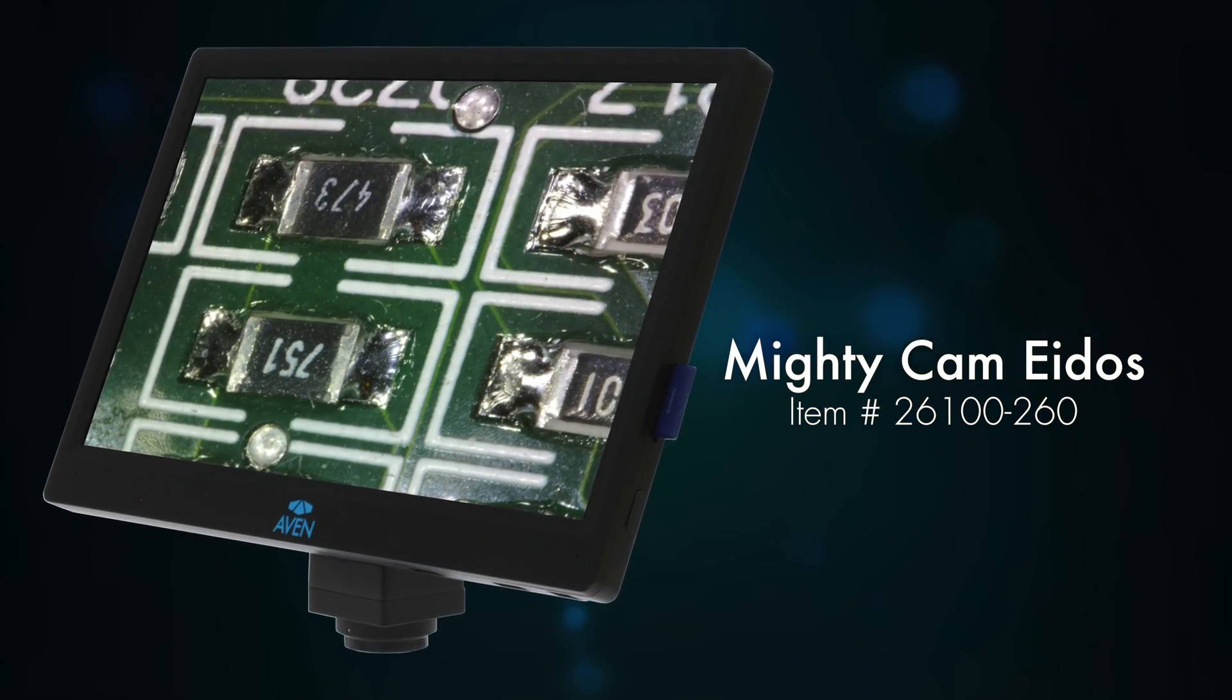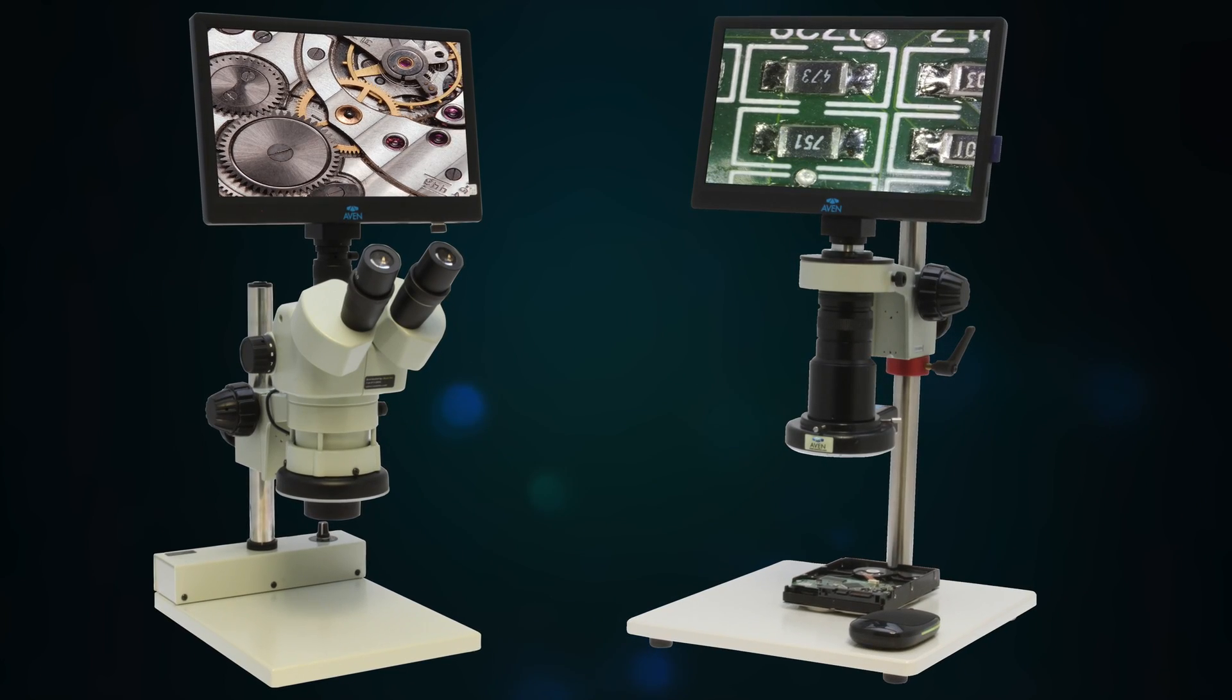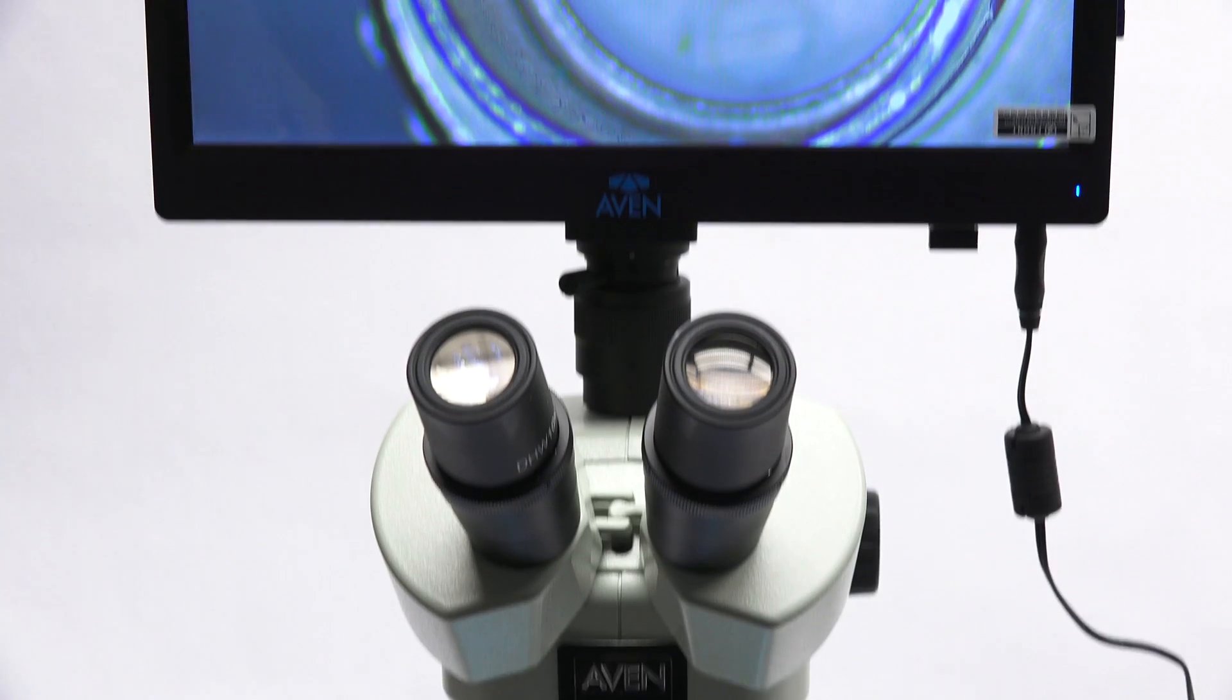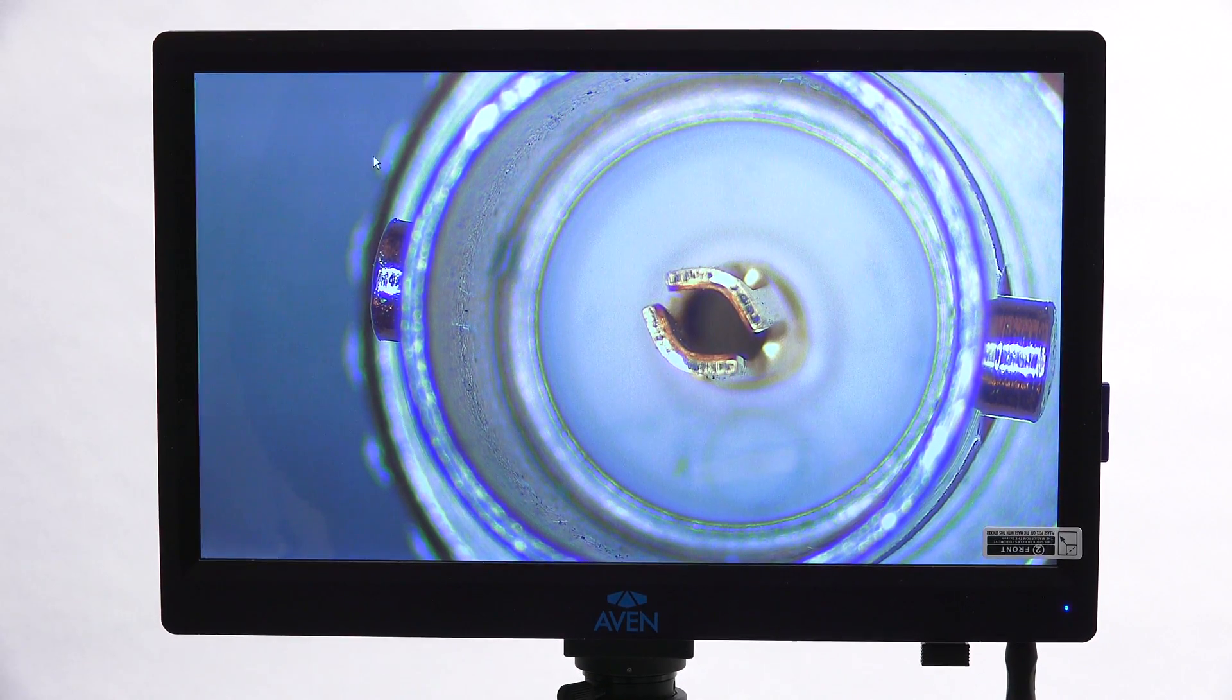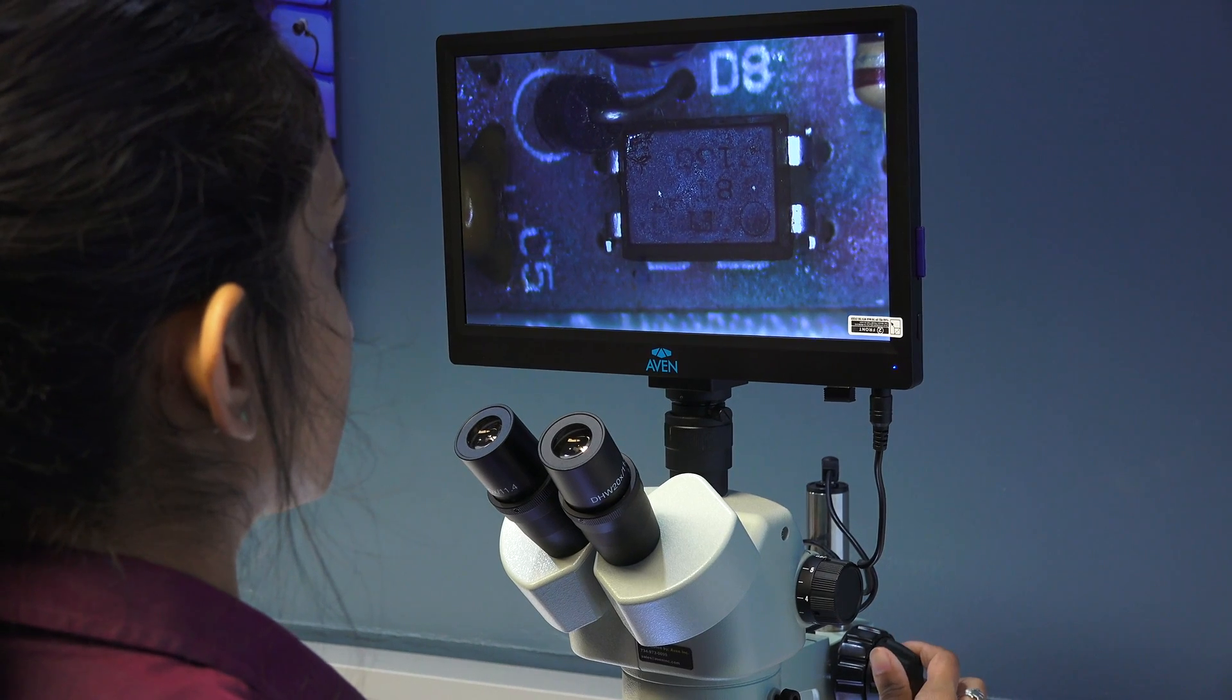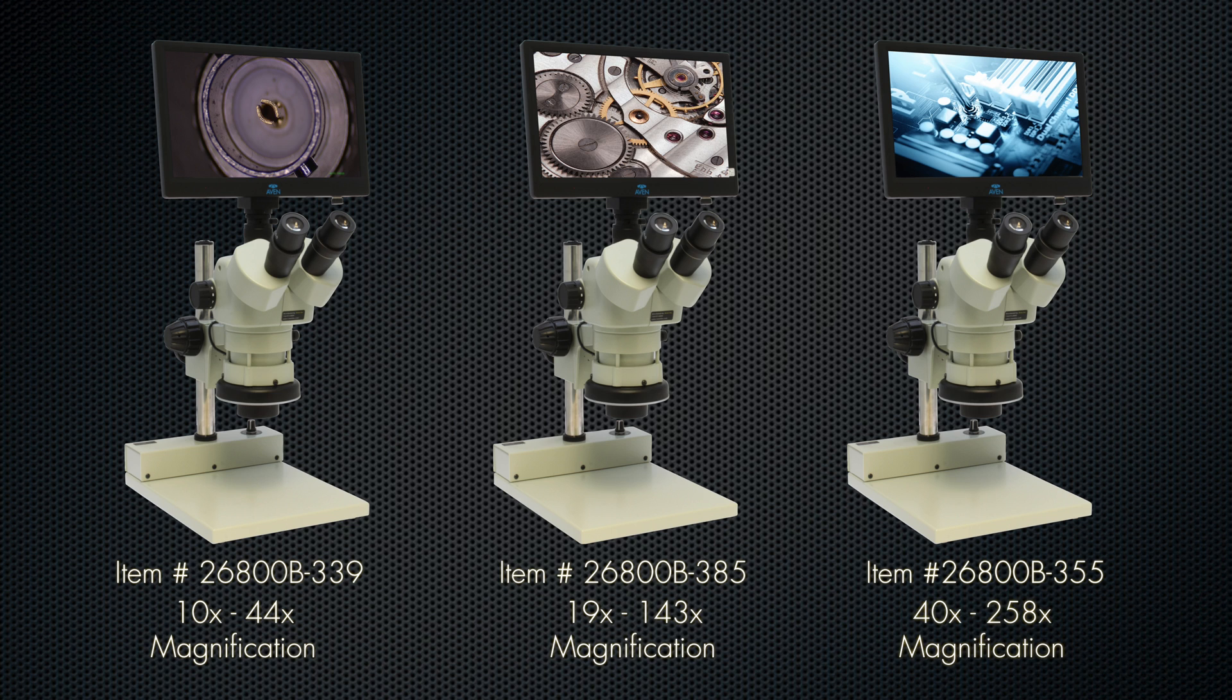Avon offers the Eidos camera as an accessory for existing inspection systems or as part of pre-configured microscope or video inspection systems. Avon's Eidos microscope systems offer users the ability to view objects through the microscope eyepieces or on the monitor with magnification ranges of 10x to 44x, 19x to 143x or 40x to 258x.